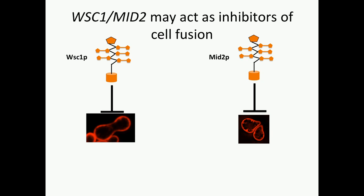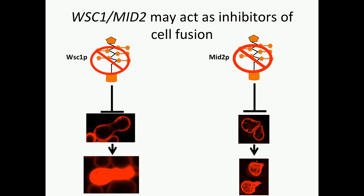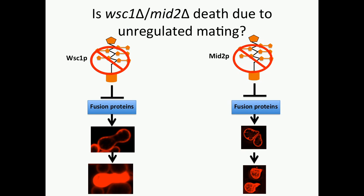Coming back to the hypothesis that the cell wall integrity pathway acts as a negative regulator of cell fusion: we hypothesize that when you get rid of WSC1 or MID2, you're actually over-activating cell fusion, and without this inhibitor you get this zygote and schmoo death. We wanted to ask whether these proteins negatively regulate fusion through the fusion proteins known to act late in cell wall degradation, and whether getting rid of WSC1 and MID2 — causing over-fusion — could be suppressed by also removing some of these fusion proteins.